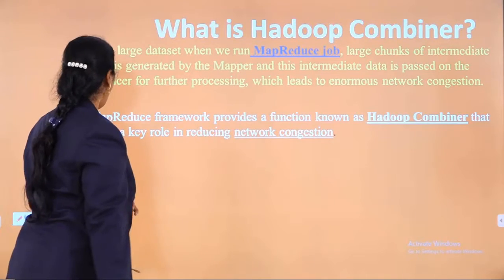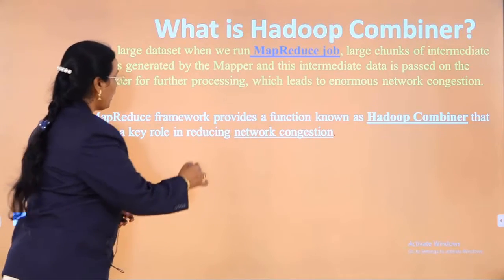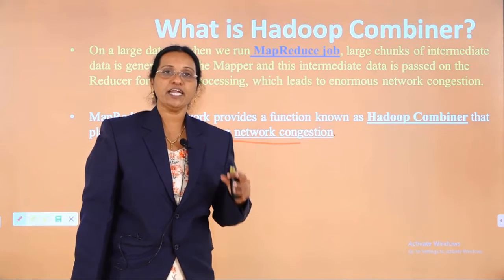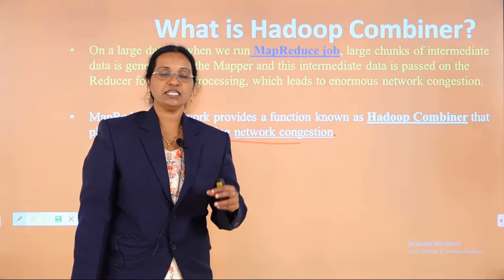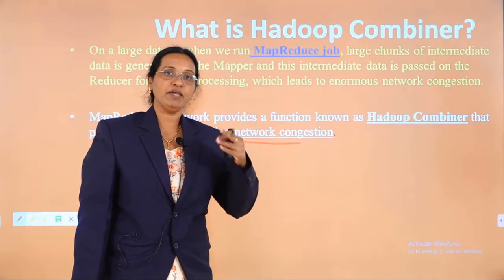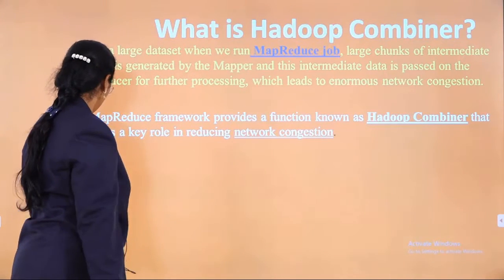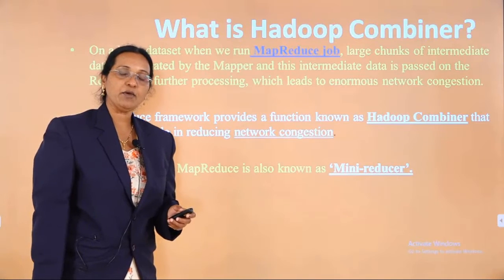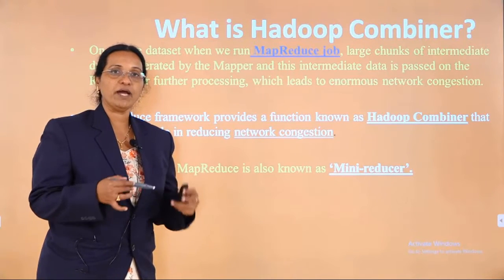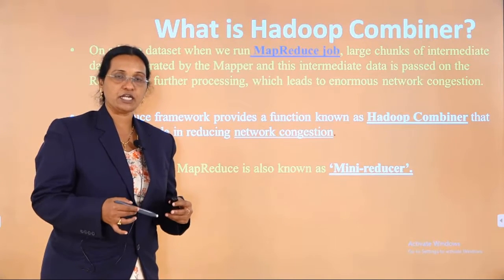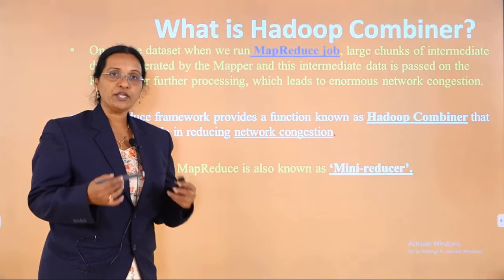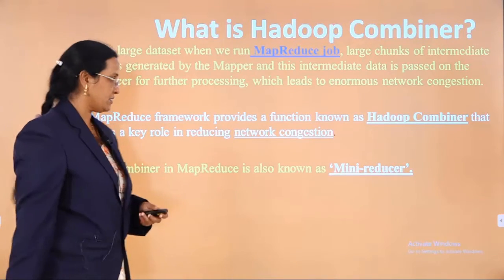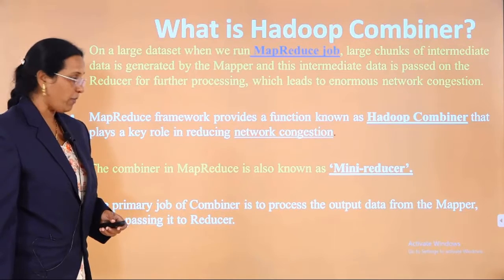The MapReduce framework provides a function known as a Hadoop combiner, which plays a key role in reducing network congestion. The combiner acts as a mini reducer — before giving the job to the reducer, half of the reducer's job is done by the mapper itself in the form of a combiner.